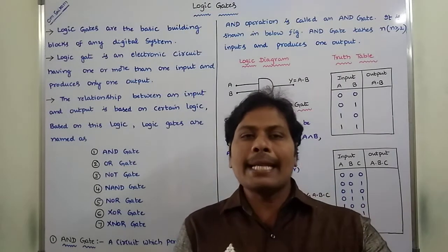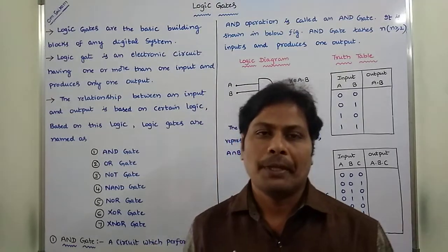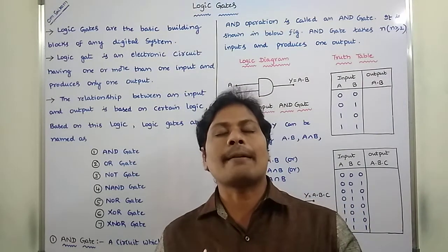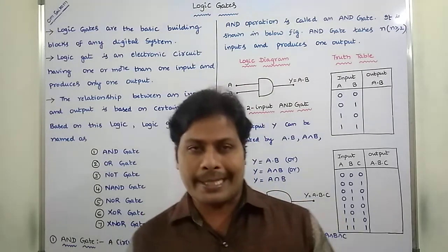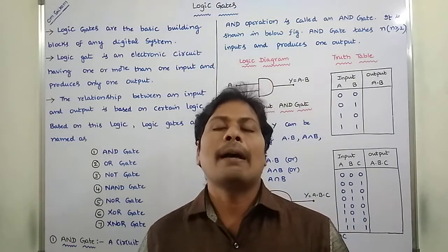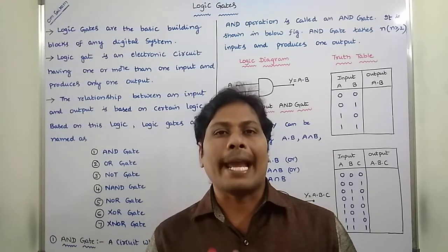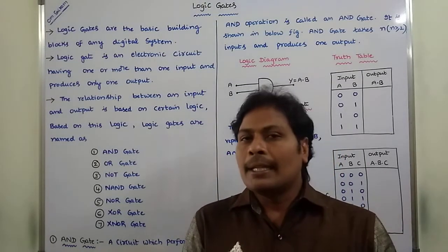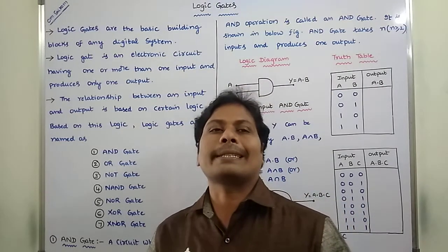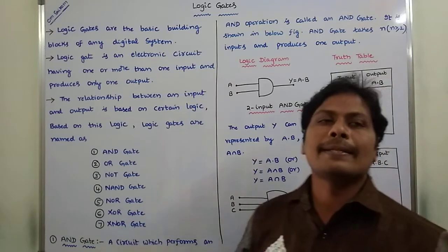Now, what is the relationship between input and output in a logic gate? The relationship between input and output depends on a particular certain logic. Based on this logic, the logic gates are named as: AND gate, OR gate, NOT gate, NOR gate, NAND gate, XOR gate, and XNOR gate. So there are seven types of logic gates.